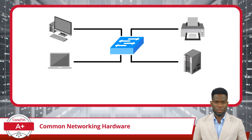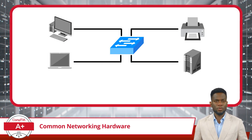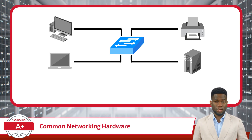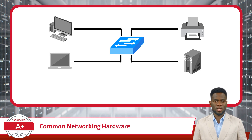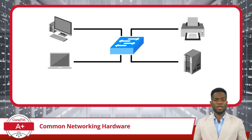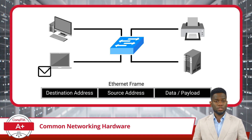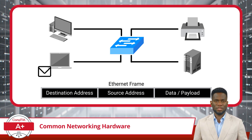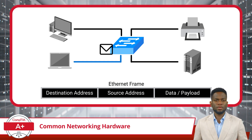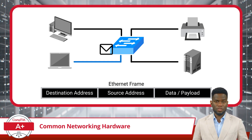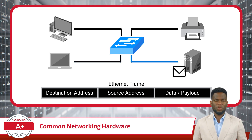Think of a network switch as a traffic controller in a network. It receives data packets from one device and intelligently forwards them to the intended recipient, ensuring efficient and direct communication. Network switches commonly use Ethernet cables or CAT cables to connect end devices to the switch ports and communicate using the Ethernet protocol. When a device wants to send data to a specific device within the LAN, it encapsulates the data into a data packet containing the destination address, the sender's source address, and the actual data or payload. This encapsulated packet is called an Ethernet Frame. The switch examines the destination address and uses that information to determine the best port to forward the packet, allowing for fast and efficient communication.